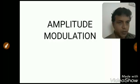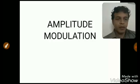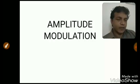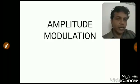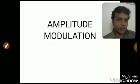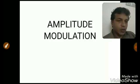Modulation is the process of changing the parameters of a carrier signal with respect to the message signal. We need to do this because our aim is to transfer the message signal from one place to another — from source to destination — but the message signal is not strong enough to carry itself to the destination. So we require the support of another signal, which is the carrier signal, and this process is called modulation.